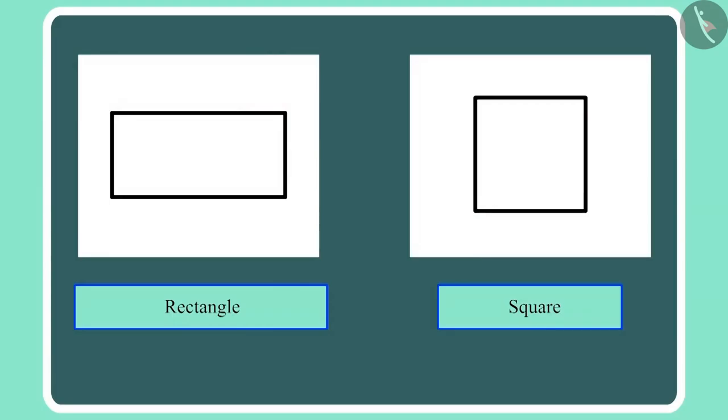Chotu, look carefully. This shape is made of four lines of the same length. That's why we call it a square.